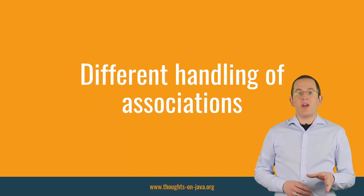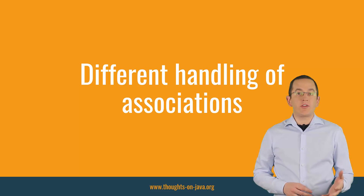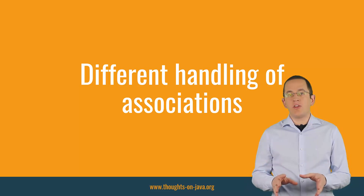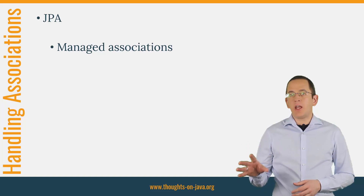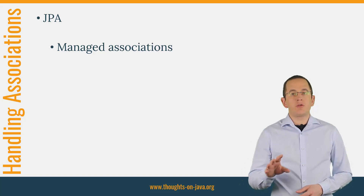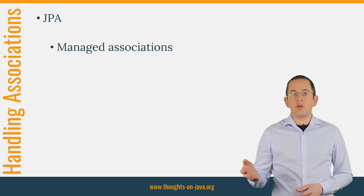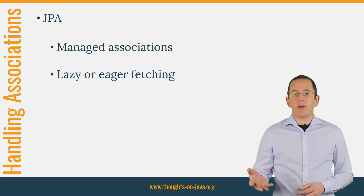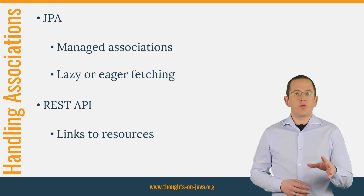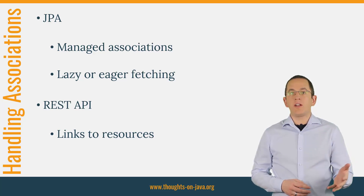Another argument to not expose your entities in your API is the handling of associations between entities. Your persistence layer and your API treat them differently — that's especially the case if you're implementing a REST API. With JPA and Hibernate, you typically use managed associations that are represented by an entity attribute. That enables you to join the entities in your queries easily and to use the entity attribute to traverse the association in your business code. In your REST API, the correct way would be to provide a link for each association. Roy Fielding described that as HATEOAS — it's one of the essential parts of a REST architecture.